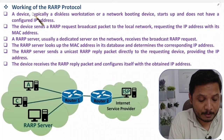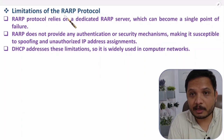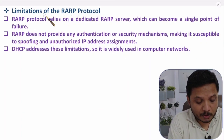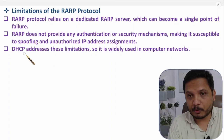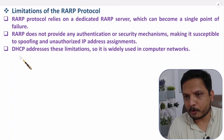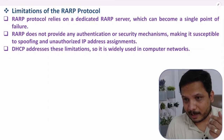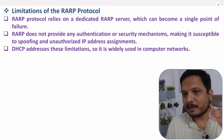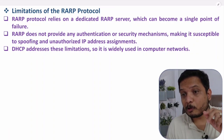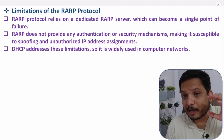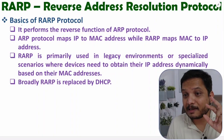Then I'll explain how RARP protocol works, and then I'll explain the limitations of this protocol. Because of these limitations, nowadays in computer networks we use DHCP protocol and not RARP. Since RARP is no longer used in modern networks, I cannot show you a practical example, but let us try to understand this protocol as it was implemented back in the 1990s.